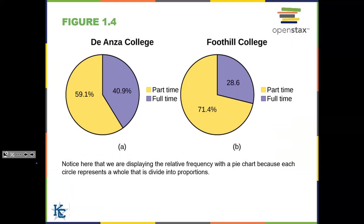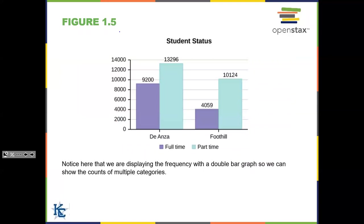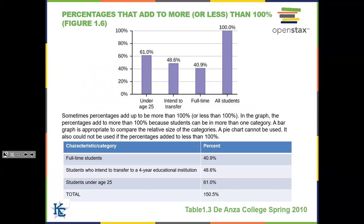Here are different ways to view the same data set — in a pie chart, a bar graph showing frequency, and another bar graph showing relative frequency as percentages. One issue is that a total of 150.5% is misleading — when data shows up past 100%, it makes it look like we have more than 100% to consider. We want things to add up to 100%, so we need to make sure we don't display misleading percentage totals.